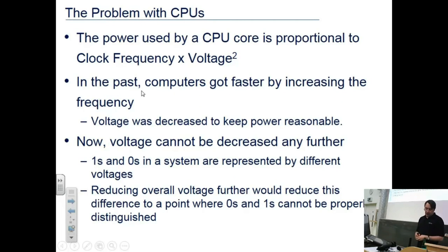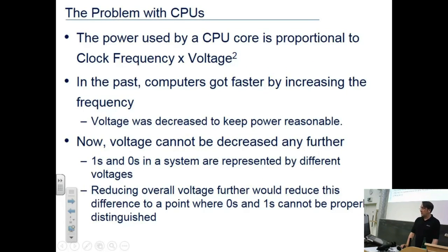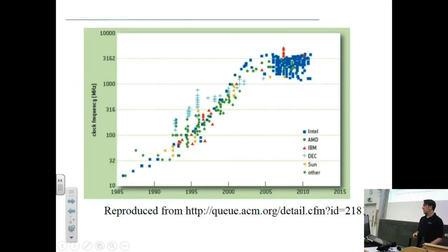The reason clock frequency has stalled: the power of a CPU is proportional to clock frequency times the square of the voltage. If you increase frequency and want constant power, you must decrease voltage. But we've reached the point where the voltage can't be decreased further - below a certain threshold you can't distinguish between a 1 and a 0. That's the engineering reason clock frequencies stalled around 2005.